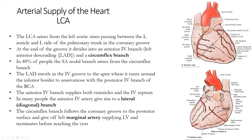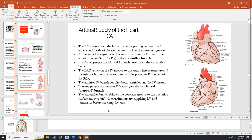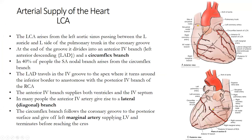The circumflex branch moves posteriorly in the coronary groove and gives off the left marginal artery, which is a primary supply of the left ventricle. It terminates before anastomosing with anything else. LCA high yields: know the circumflex branch and the left anterior descending; know the LAD reaches the apex and communicates with the posterior interventricular branch; the circumflex gives off the left marginal artery supplying the left ventricle. Those are your most high-yield coronary points.